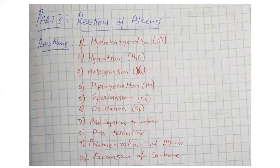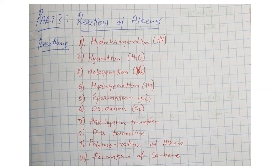There are 10 reactions of alkenes. The first is hydrohalogenation — adding HX to alkenes. Second is hydration — adding water to alkenes. Third is halogenation — adding a halogen molecule (a diatomic element) to alkenes. Fourth is hydrogenation — addition of hydrogen. Do not confuse hydrohalogenation, halogenation, and hydrogenation: halogenation is addition of halogen, hydrogenation is addition of hydrogen — they are different.